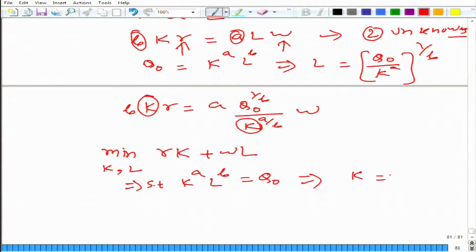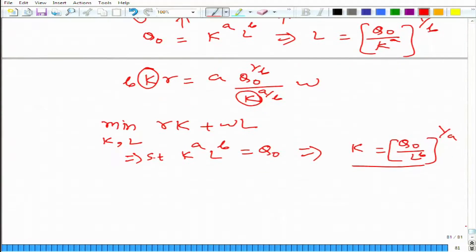Let's get rid of k in this case. k is q naught over l to the power b, whole to the power 1 over a. What we are saying basically is that k and l are not independent of each other, they vary in one particular way and this equation gives that variation. We are making k an implicit function of l, and we plug it back.